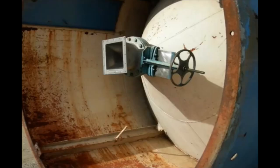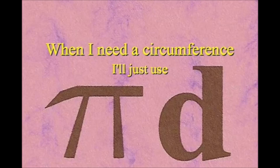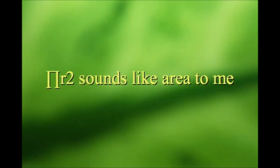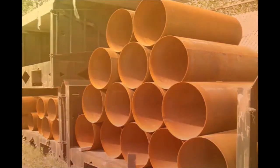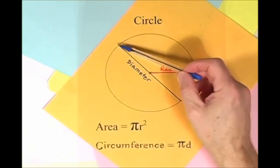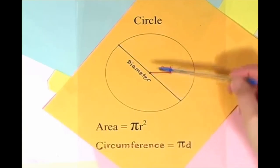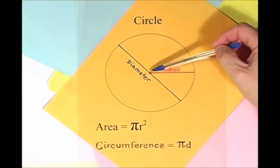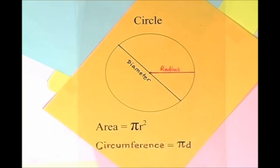Now isn't that simple. Pi r squared sounds like area to me, when I need a circumference, I'll just use pi d. Pi r squared sounds like area to me. Here is a circle, it knows how to get around. It has a radius from center to rim. And its diameter's a line that goes from side to side while passing through the center. Pi r squared sounds like area to me, when I need a circumference, I'll just use pi d.